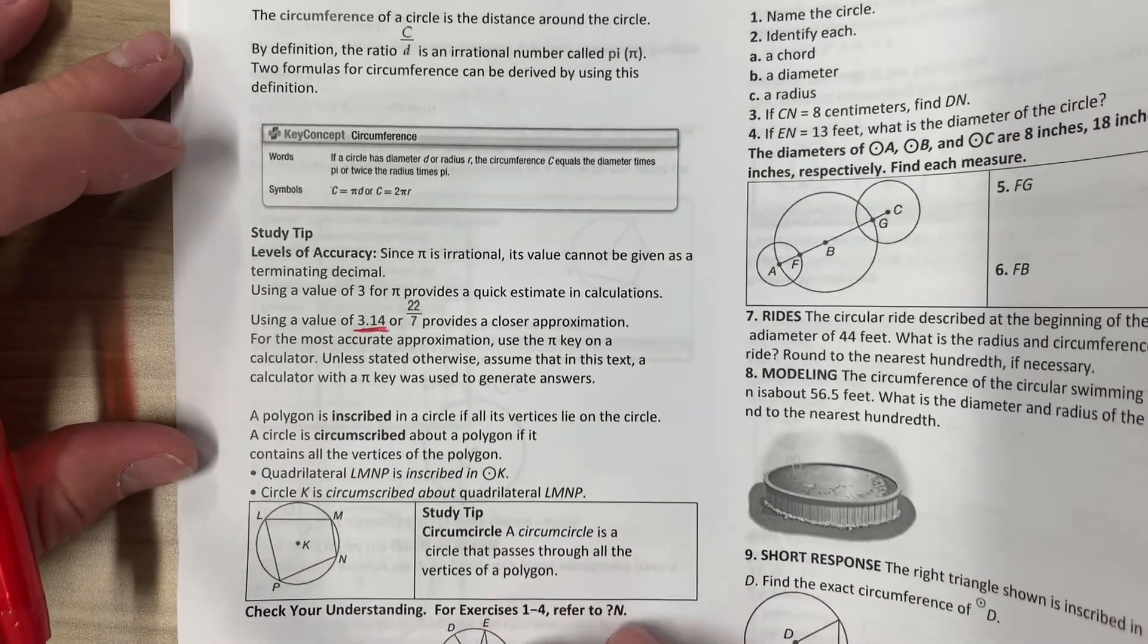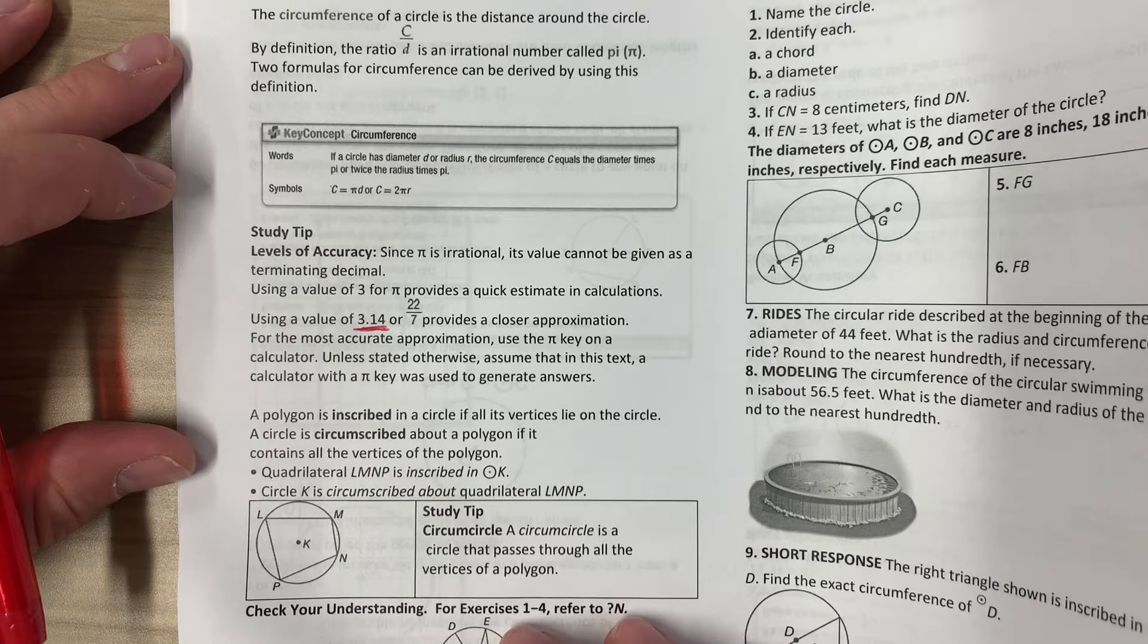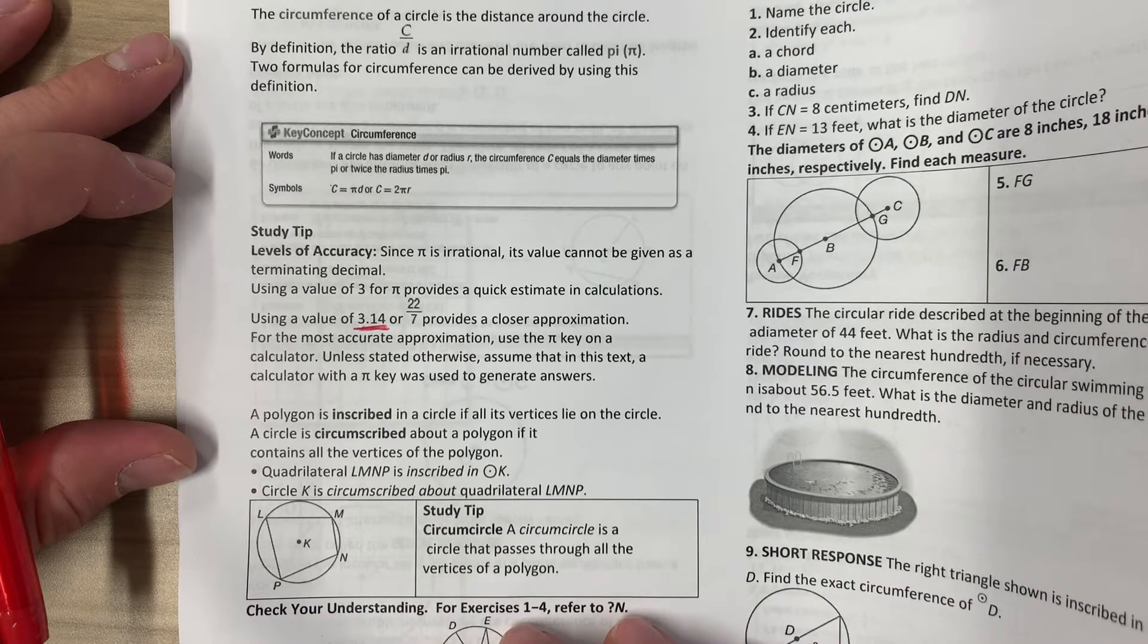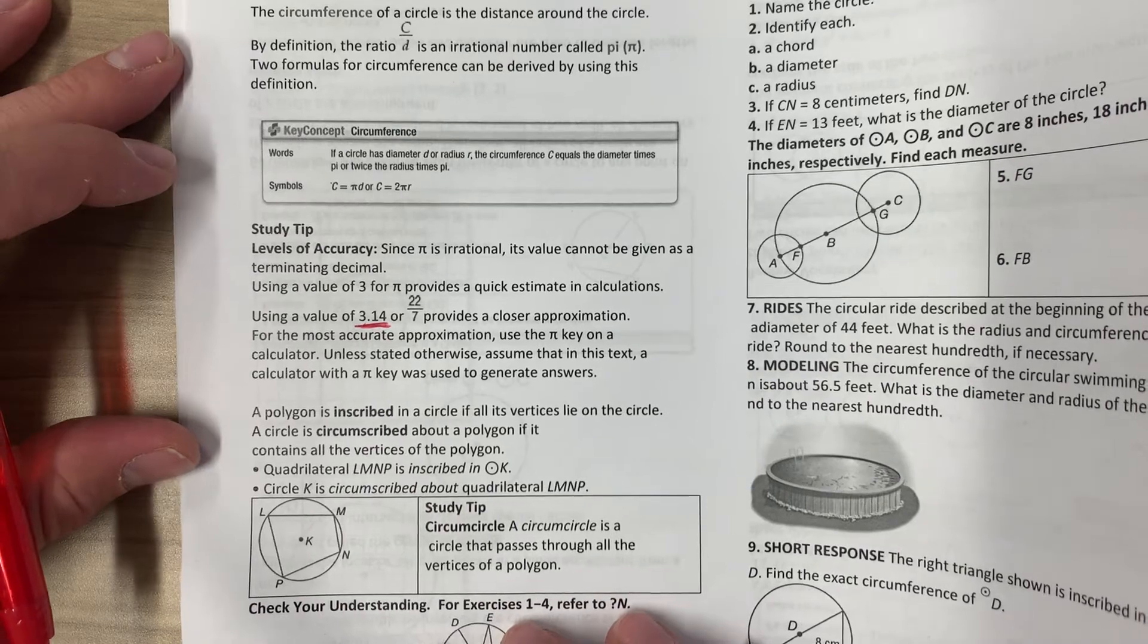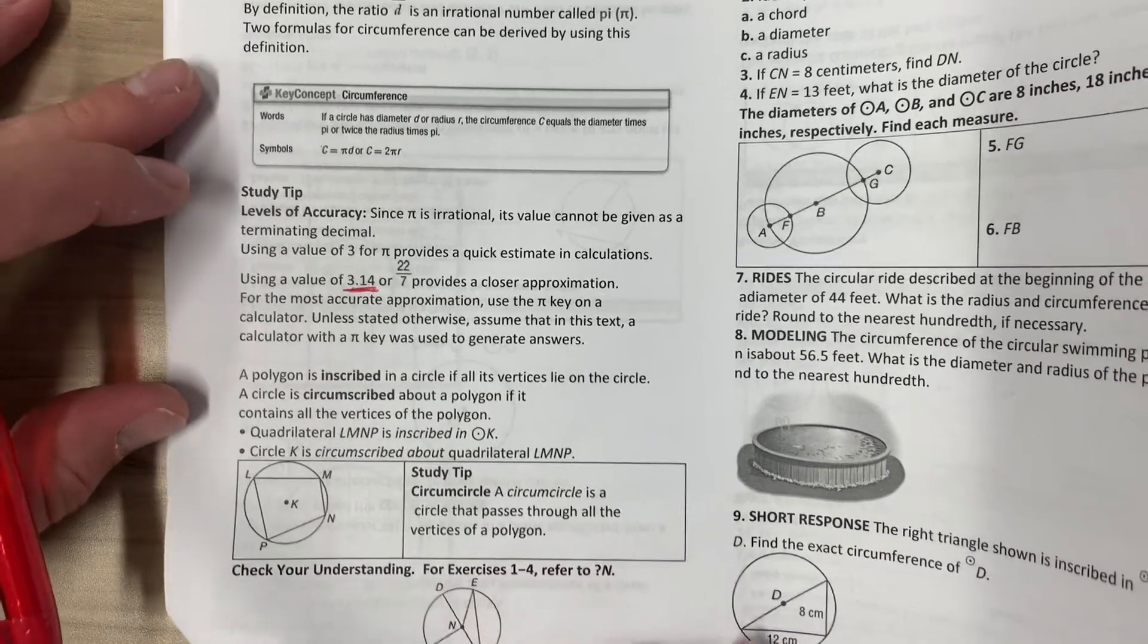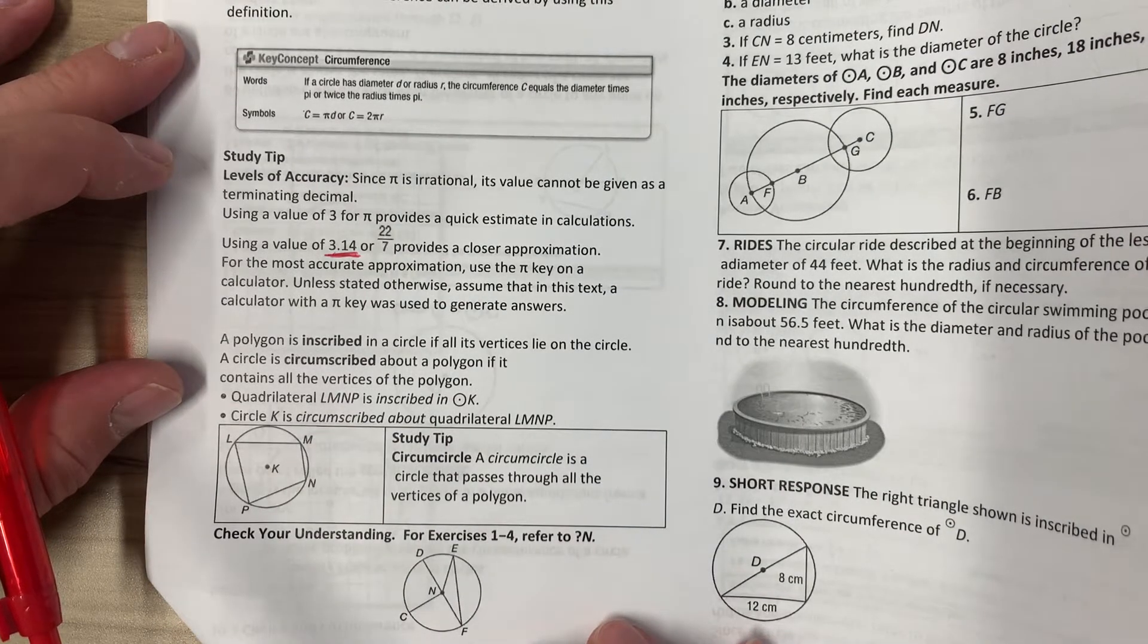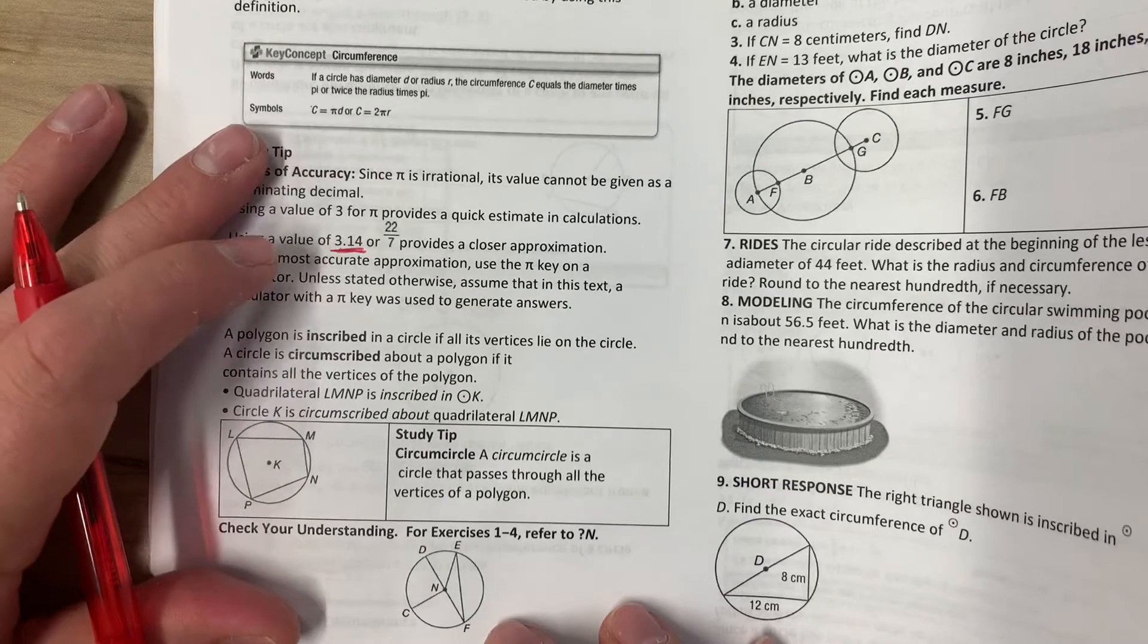A polygon is inscribed in a circle if all of its vertices lie on the circle. A circle is circumscribed about a polygon if it contains all the vertices of the polygon. Quadrilateral LMNP is inscribed in circle K. Circle K is circumscribed about quadrilateral LMNP. A circumcircle is a circle that passes through all the vertices of a polygon.